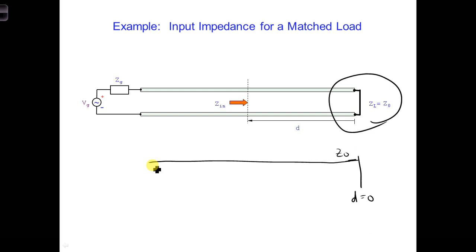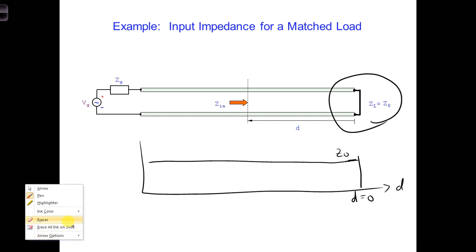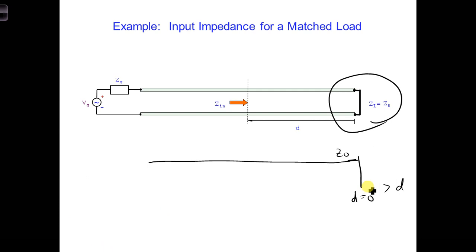The load, the transmission line characteristic impedance, and the input impedance anywhere along the line are Z-naught. So this is a plot versus D. Maybe it would be better to label this as being D and Z-naught. So here is D equal L, and it just stays Z-naught everywhere.